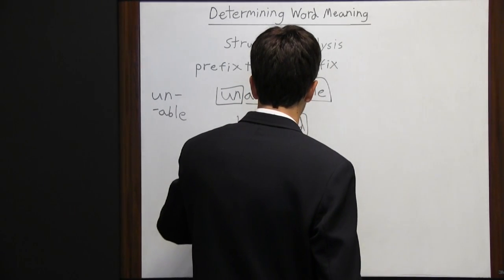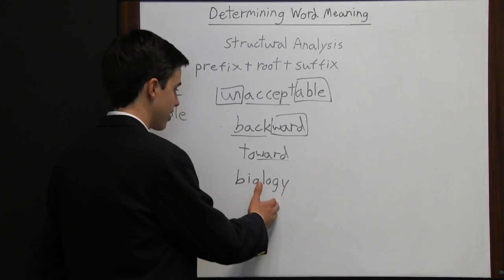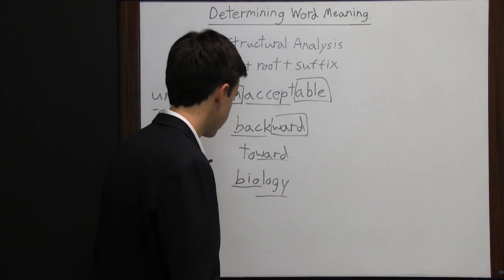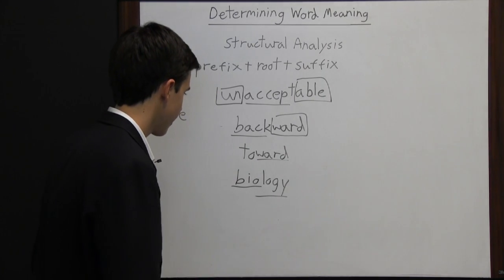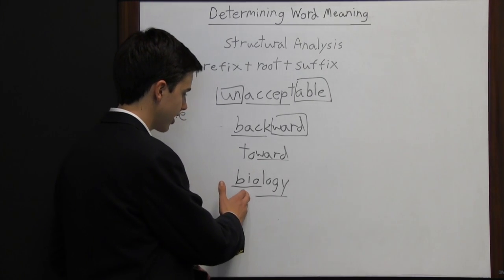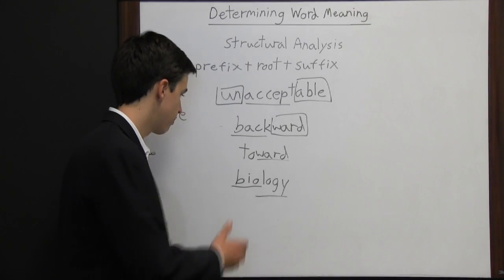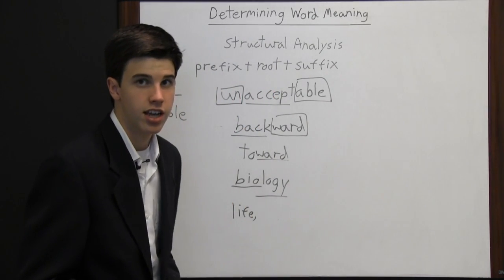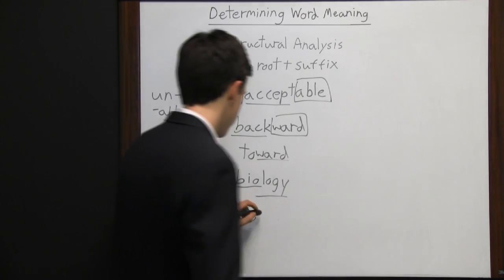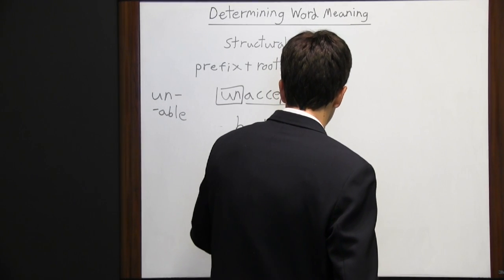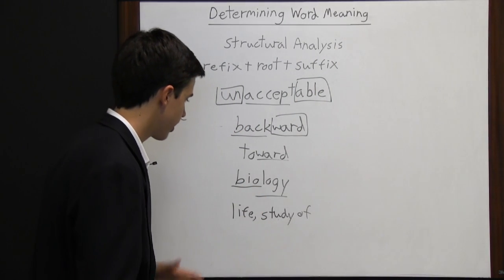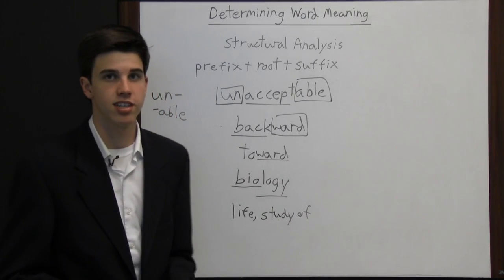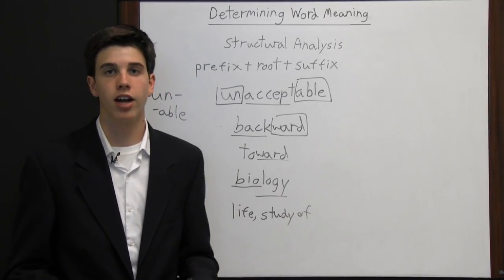Some words just have a prefix, and some words have a prefix and suffix but no standalone root word. Take 'biology': 'bio' is a prefix and 'ology' is a suffix. You may recognize 'bio' from 'biography' — a book about someone's life — so 'bio' must mean life. And 'ology,' as in 'archaeology,' means the study of something. So by knowing the prefix and suffix, you can conclude that 'biology' most likely means 'the study of life.' It's important to understand common prefixes and suffixes so you can determine the meaning of an unfamiliar word.